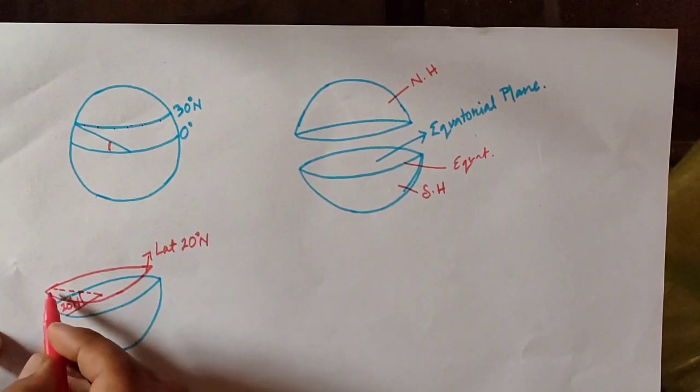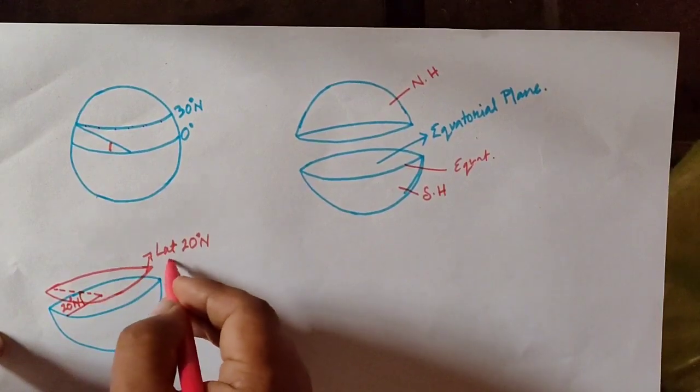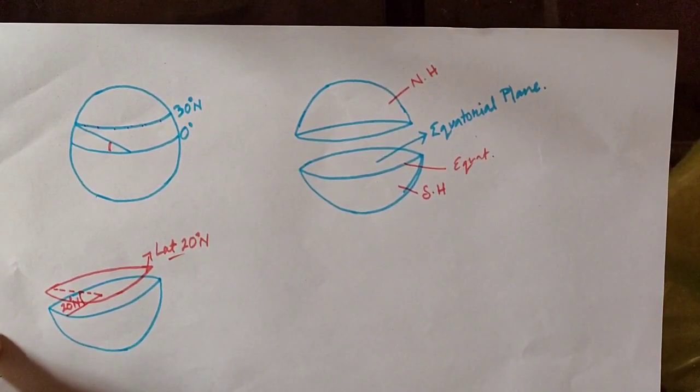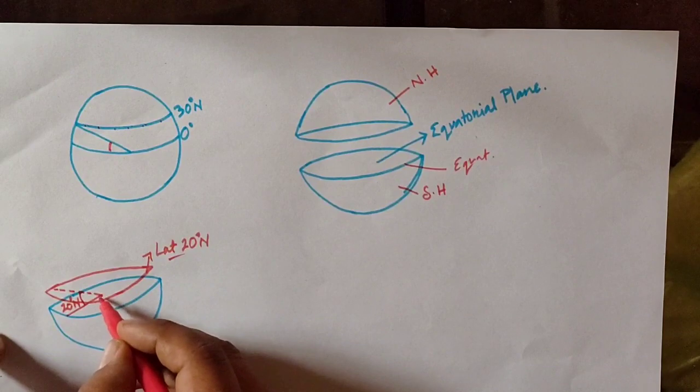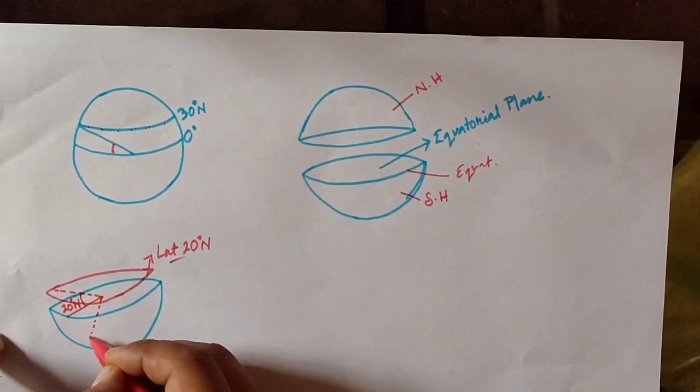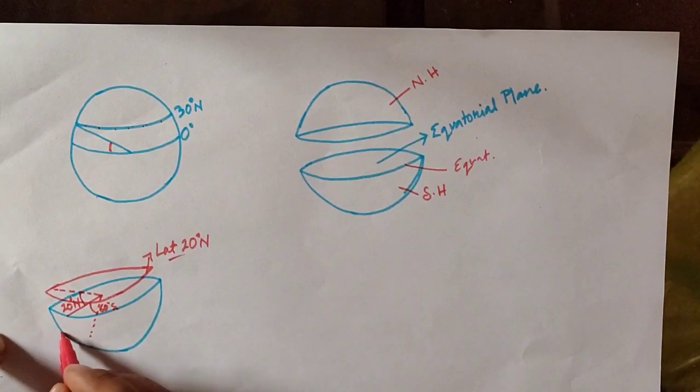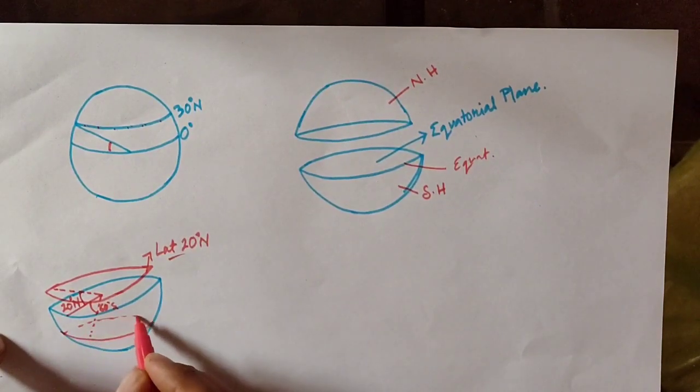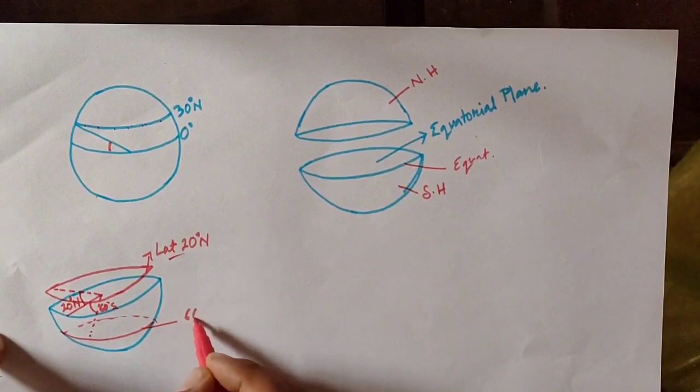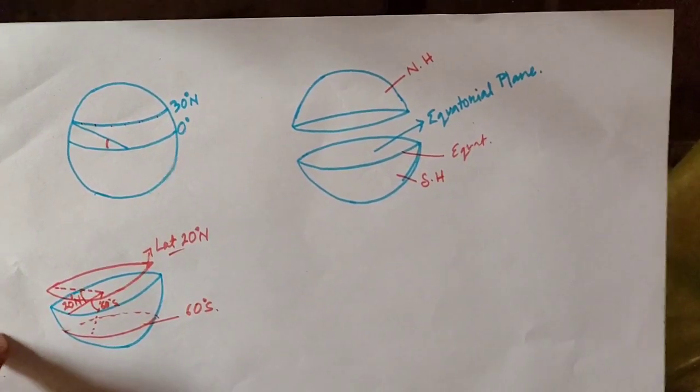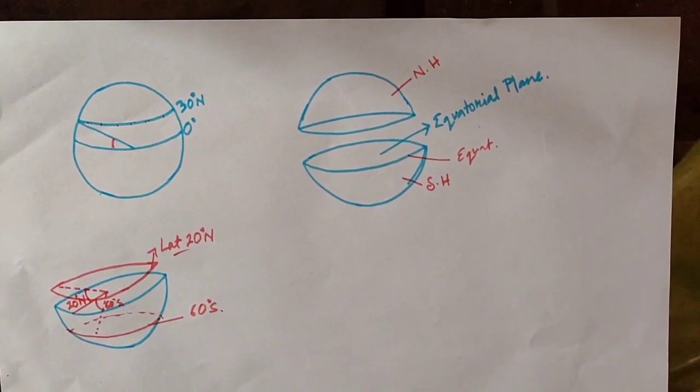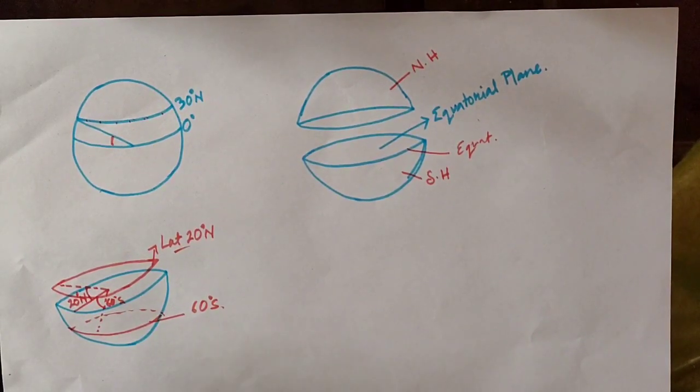If a line is drawn at that angle, it will be considered as the latitude of 20 degrees. Similarly, if we draw an angle of 60 degrees from the center of the earth towards the south of the equator, that line will be 60 degrees south. We have to be specific whether we are denoting northern or southern hemisphere, because 60 degrees will also form in the northern hemisphere.